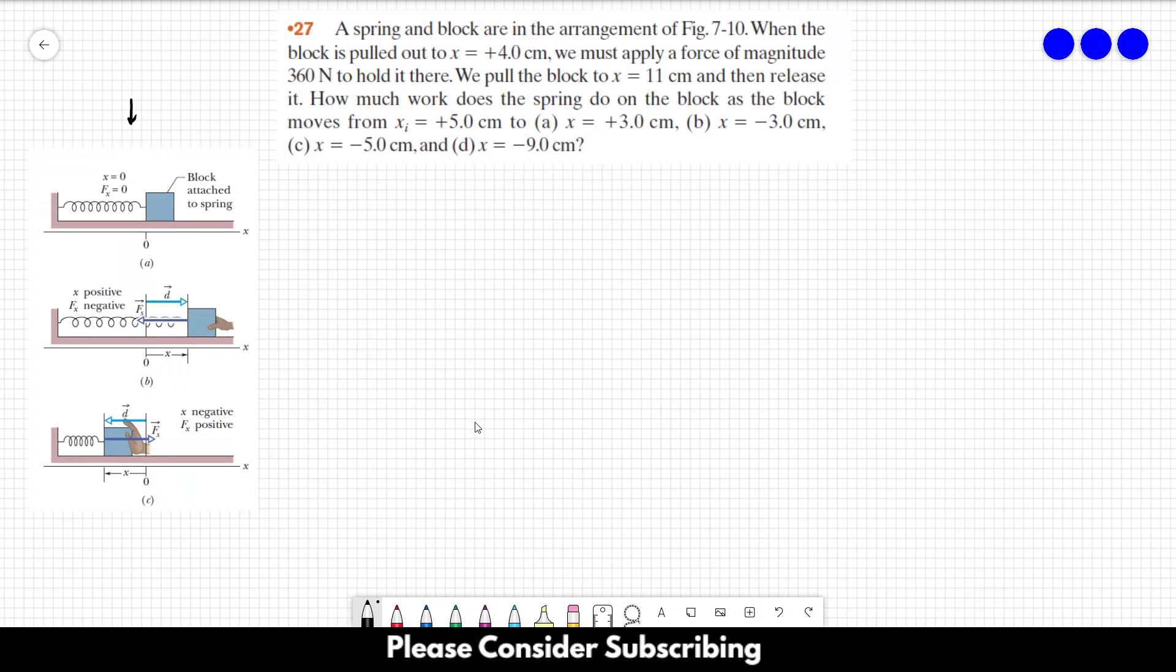We pull the block to x = 11 centimeters and then release it. How much work does the spring do on the block as it moves from x_i = 5 cm to: (a) x = 3 cm, (b) x = -3 cm, (c) x = -5 cm, and (d) x = -9 cm?